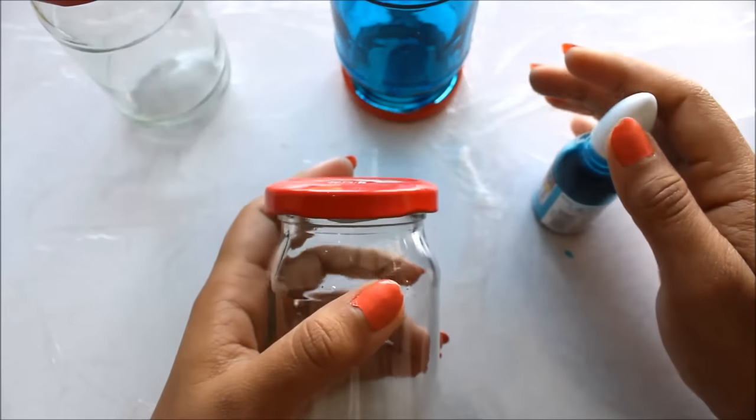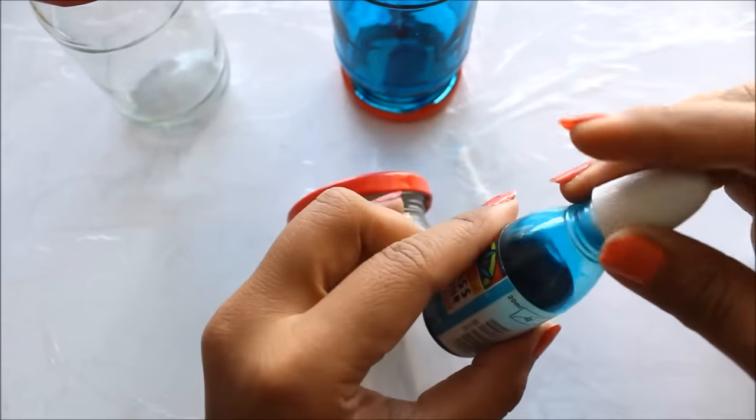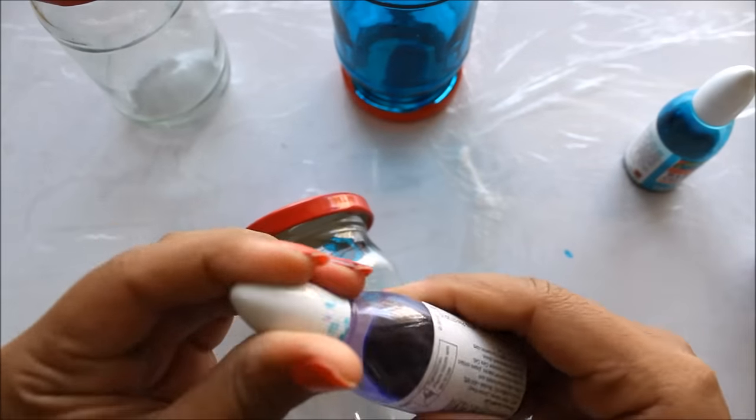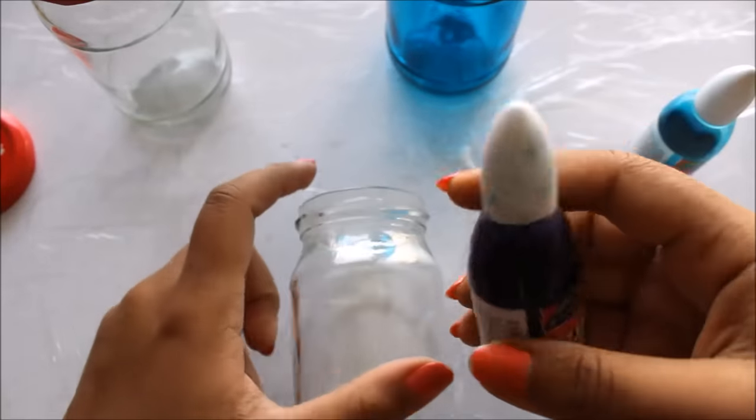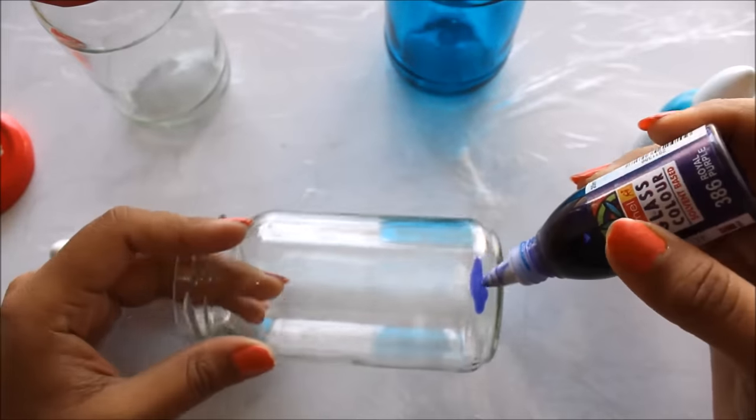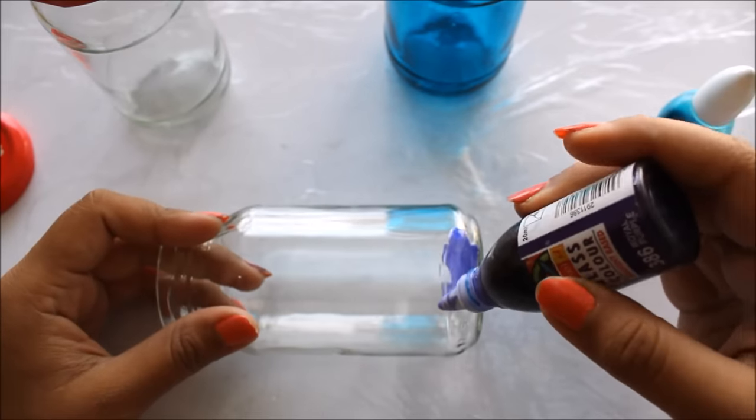Now we are going to color our second jar in a different way and for that I'm going to use purple. Check your color very well before coloring. Start it from a side. I generally don't use a brush.